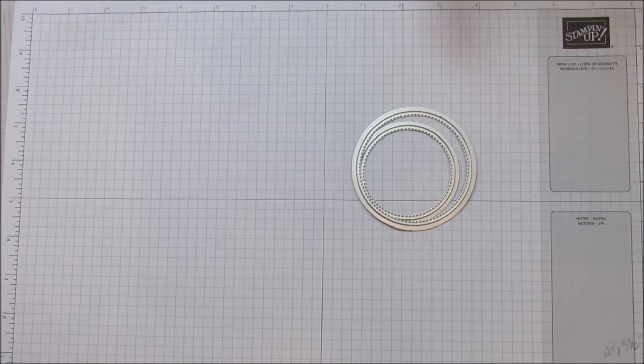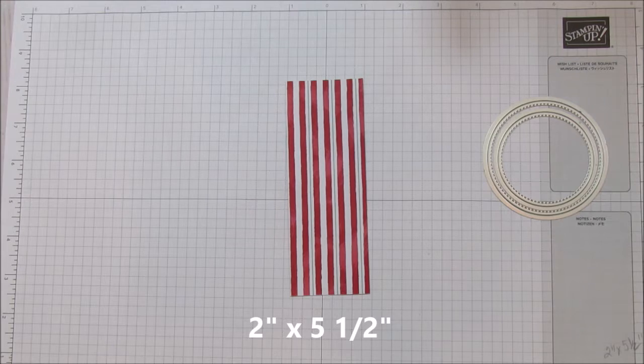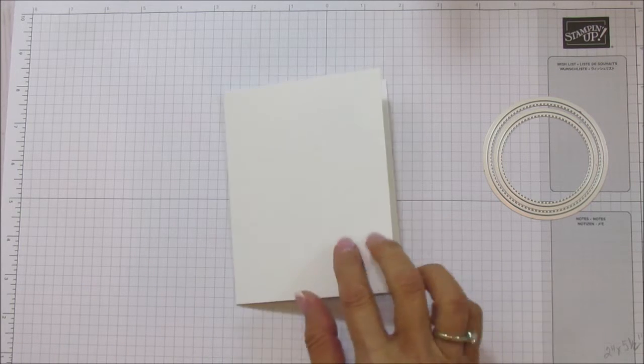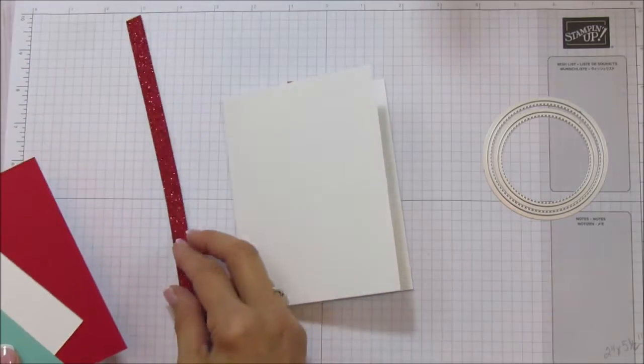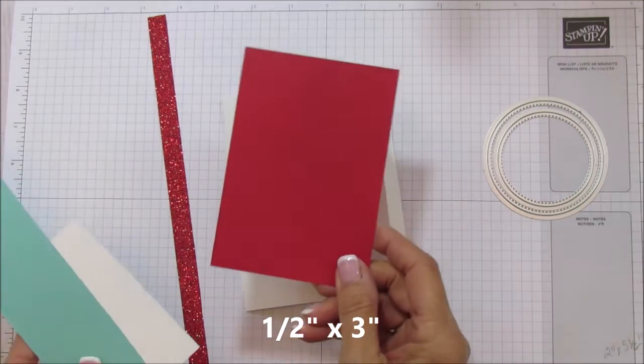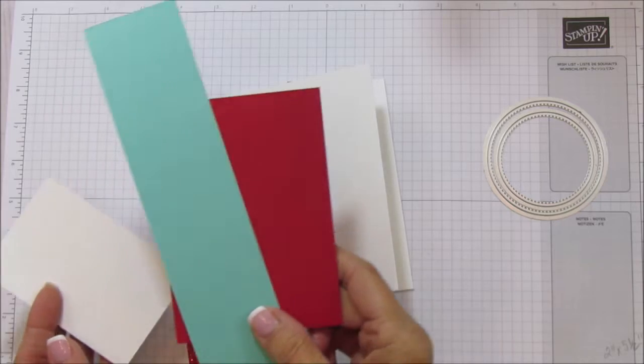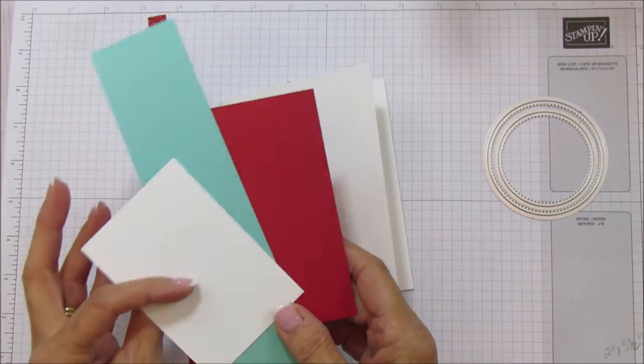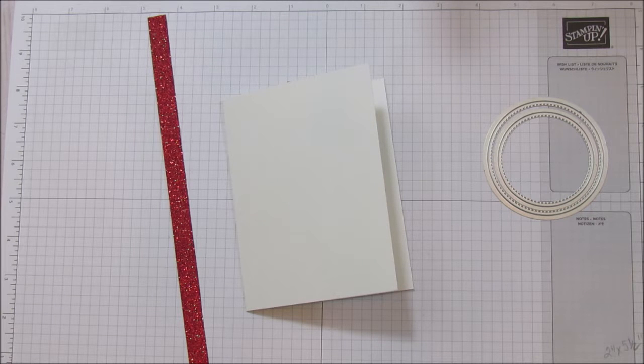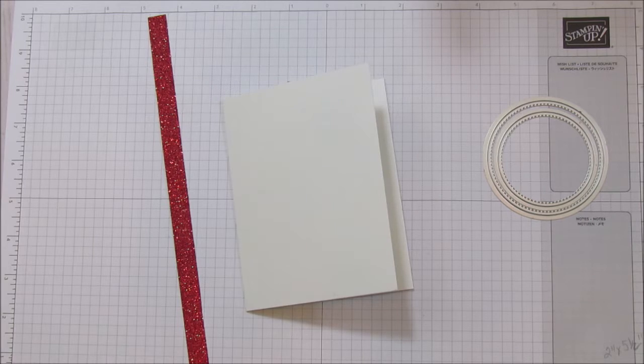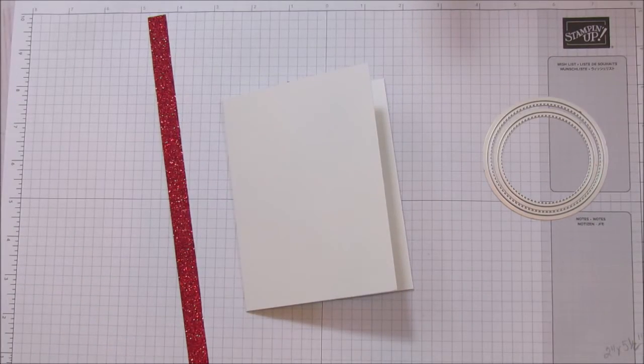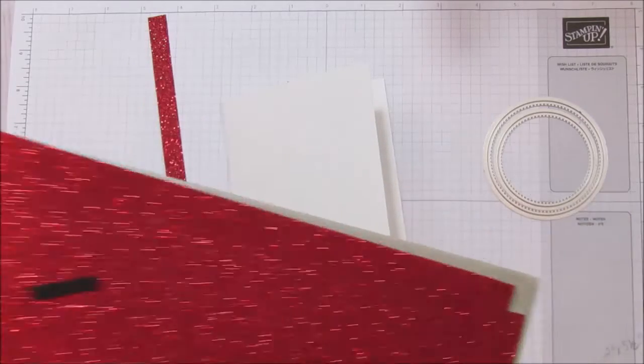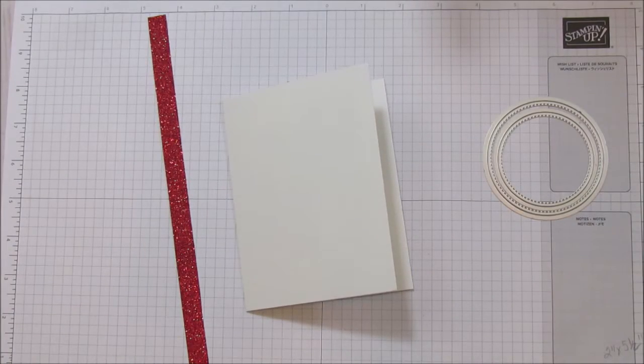You are going to need a piece to mat, which is 2 by 5 and a half, and then your card base, which is 5 and a half by 4 and a quarter, and then a bunch of different scraps. So I'm using our red glimmer paper, some real red cardstock, some Coastal Cabana cardstock, and some Whisper White cardstock. And then we are going to use our real red cotton ribbon and the Let It Snow Designer Series paper. So that's everything that we're going to need for this.